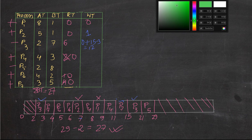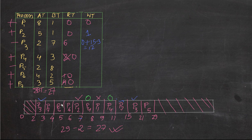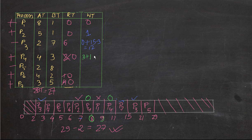For P4: it has appeared twice. First occurrence: visiting time 7 minus arrival time 4 equals 3. Second occurrence: visiting time 9 minus finishing time 8 equals 1. Total waiting time for P4 is 3 plus 1 equals 4.